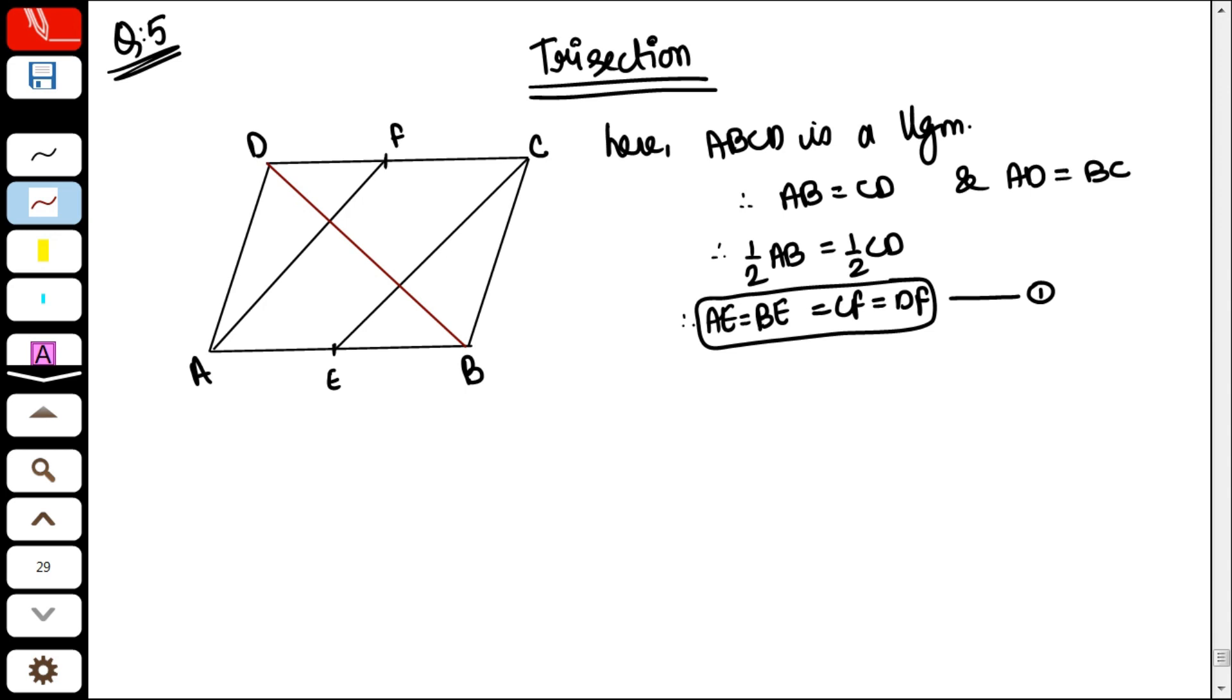One parallelogram ABCD. So its opposite sides are equal. AB equals CD and AD equals BC. So their halves are also equal because E and F are both midpoints. We've derived up to here. In the question it's asked that AF and EC, the diagonal BD, divide it into 1, 2, 3 equal parts. And that is what you call trisection. If there are 2 equal, we call it bisection. Three is trisection.